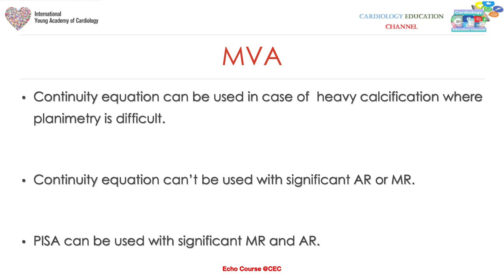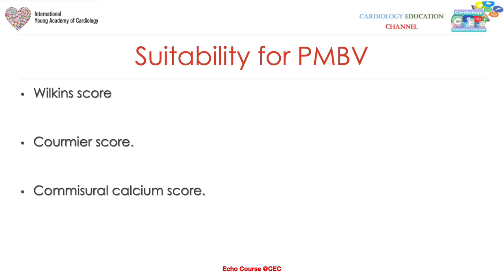These more complex methods — continuity equation and PISA — can be used when traditional methods are hindered. The continuity equation is useful in heavy calcification where planimetry is difficult, but cannot be used with significant AR or MR. PISA can be used with significant mitral regurgitation and aortic regurgitation.